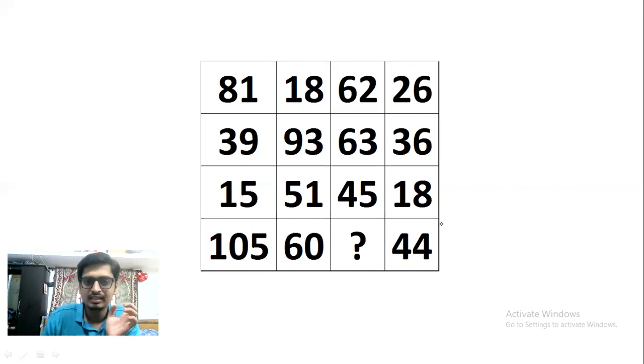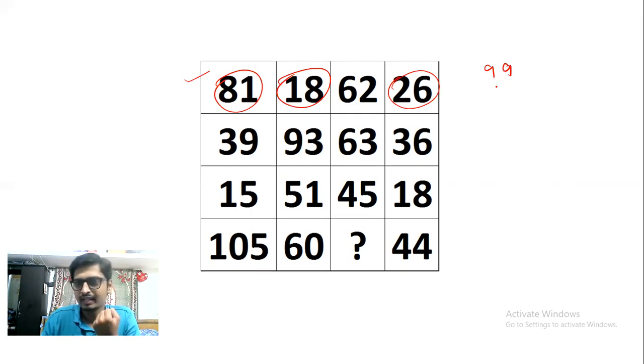Now, what is the relationship between numbers in row? So 81, 18, 62, and 26. Usually, I will start counting in row, then I will come for column. If I try to establish the relationship between numbers, I will try to start adding it. For example, I will add 18 and 81, then I try to subtract it from 26. So if I do that, 81 plus 18, I get 99. Then I will add it with 26. Then I will subtract 26. Then I will try to check whether I'm getting 62 or not. It is not working. I get 73. So 62 is not coming.